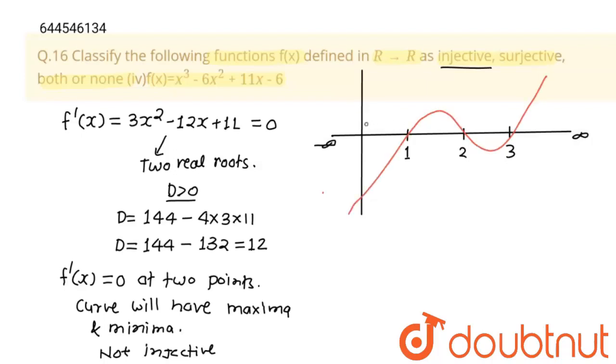And you can see this is many-one function. How? Draw a line parallel to x-axis. This line cuts curve two times. It means that this is many-one. And many-one functions are not injective functions. One-one function is injective function.